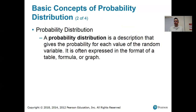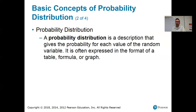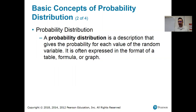A probability distribution is a description that gives the probability for each value of the random variable. Going back to that example: if you flip a coin two times and X is the number of heads, X is going to be either zero, one, or two — because heads could come up no times, one time, or both times. Probability distributions are expressed either in the form of a table, a formula, or a graph. A probability histogram would be an example of a graph.